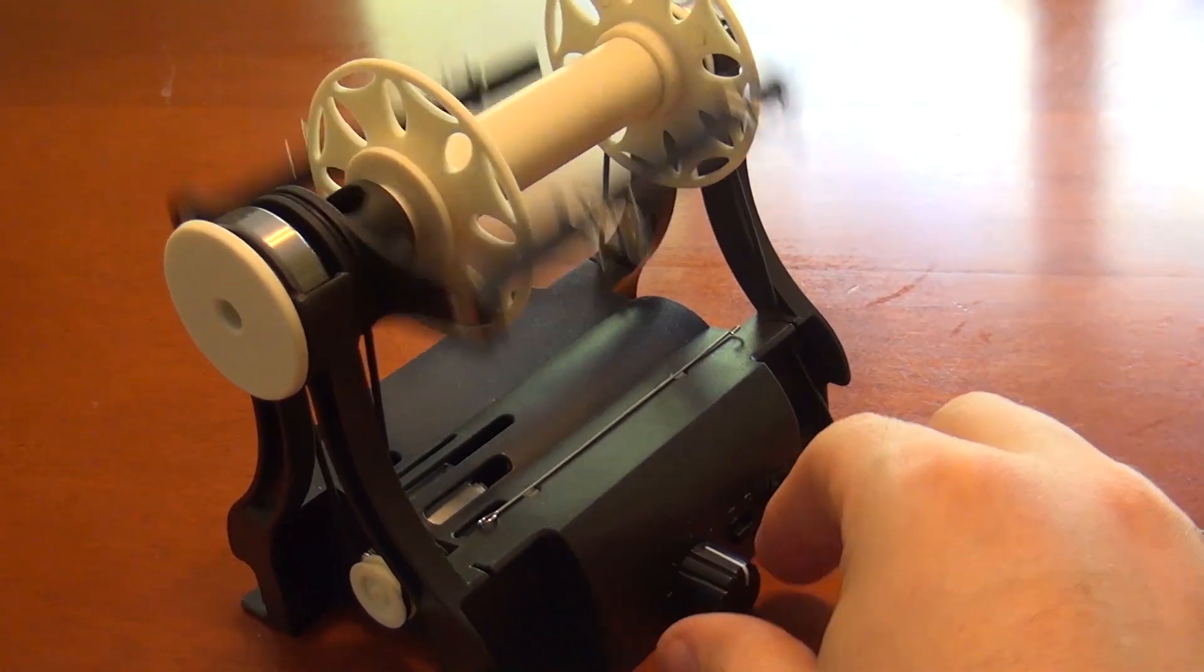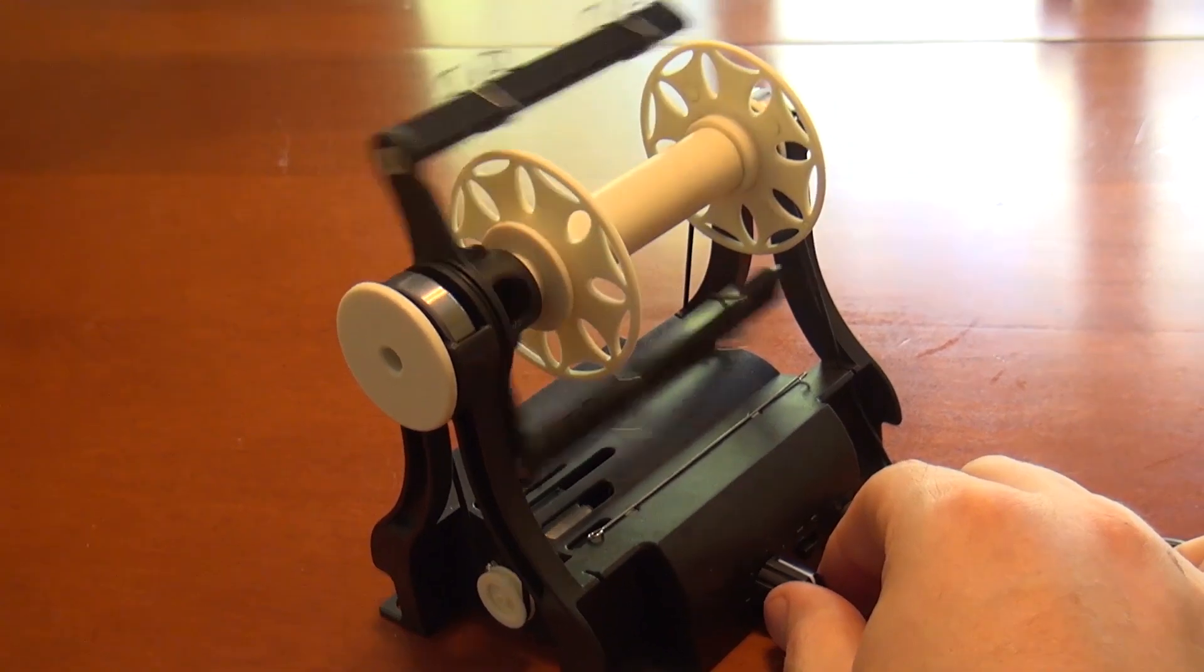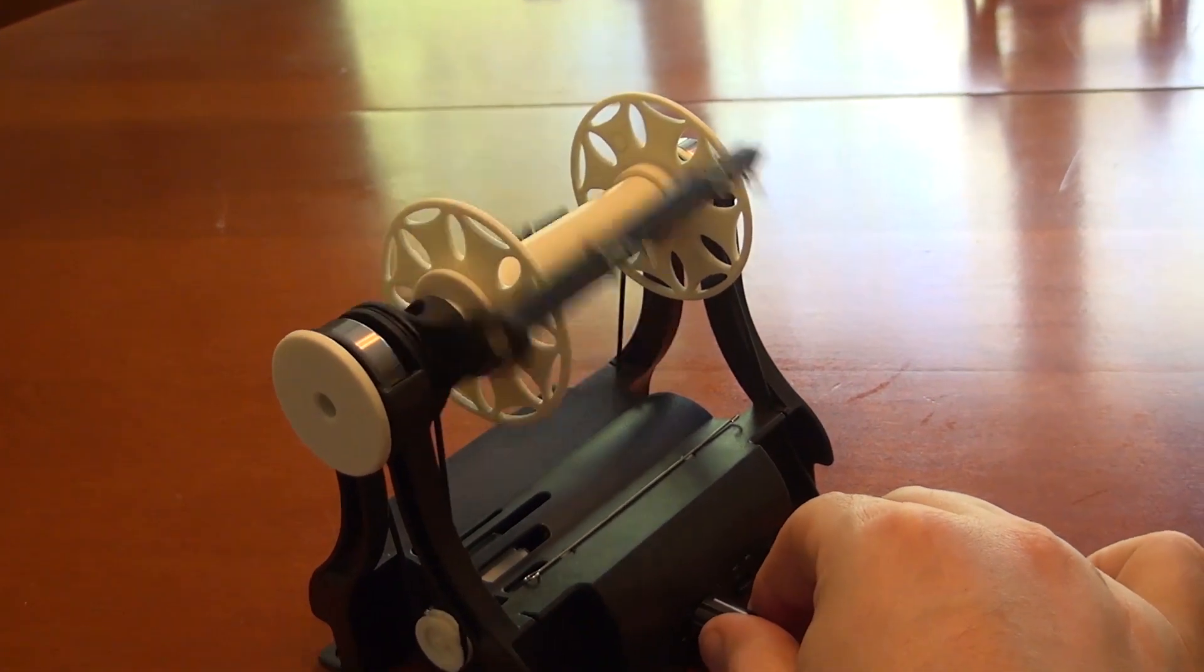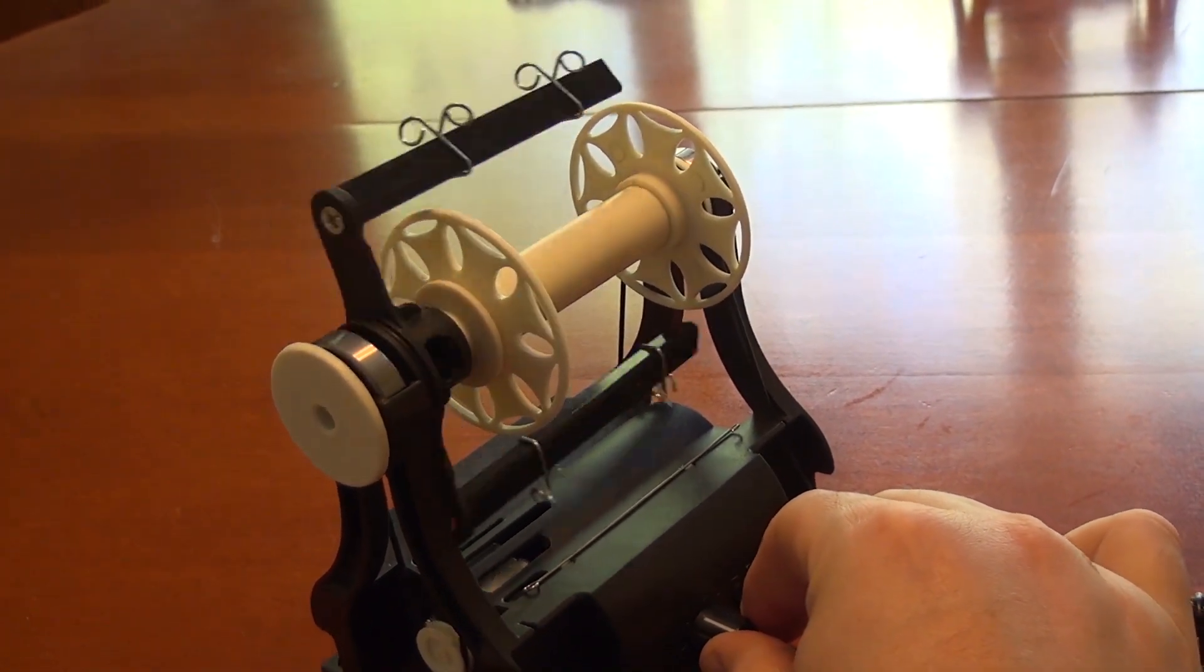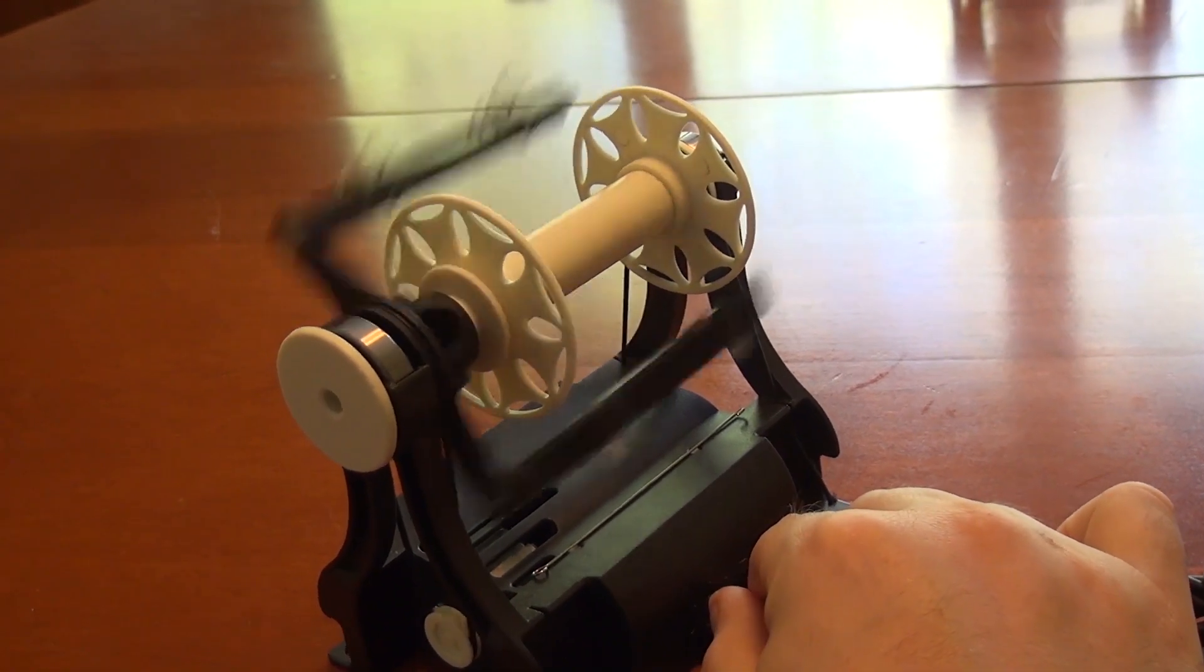This is a speed control. It controls how fast the flyer spins. If you turn it counter clockwise it goes slower like this. If you turn it clockwise it goes faster like this.